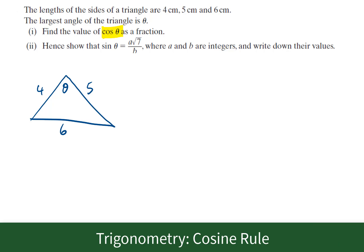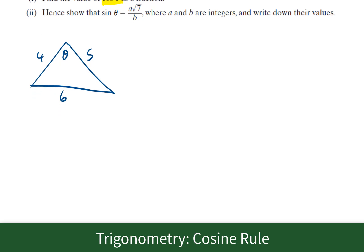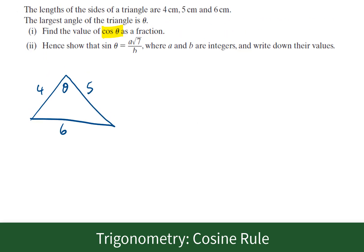In a non-right angle triangle, where we have 3 sides and we're interested in an angle, we'd use the cosine rule. The cosine rule says that a squared is equal to b squared plus c squared minus 2bc cosine of the angle A. The important thing here is theta and 6 are across from each other.